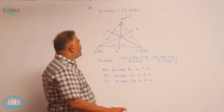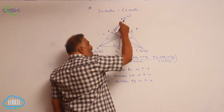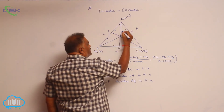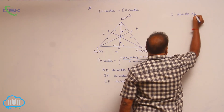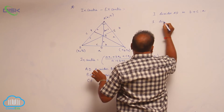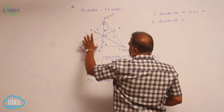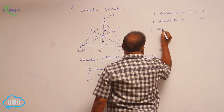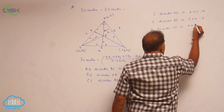One more property: the incenter I divides every internal angular bisector in a specific ratio. I divides AD in the ratio (B + C) : A. In the same fashion, I divides BE in the ratio (C + A) : B. Then I divides CF in the ratio (A + B) : C. You can observe the cyclic order: BCA, CAB.